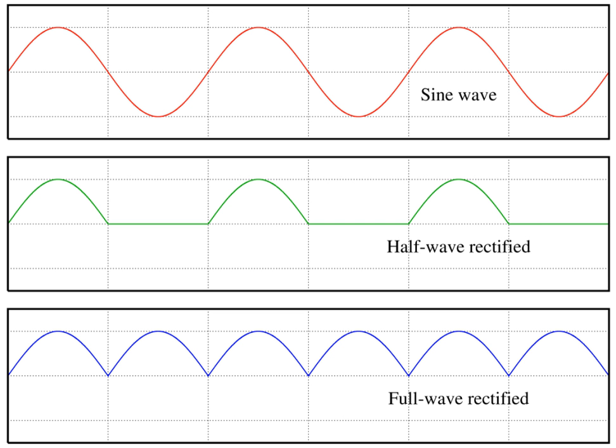Waves exhibit common behaviors under a number of standard situations. Waves normally move in a straight line through a transmission medium. Such media can be classified into: a bounded medium if it is finite in extent, otherwise an unbounded medium; a linear medium if the amplitudes of different waves at any particular point in the medium can be added; a uniform or homogeneous medium if its physical properties are unchanged at different locations in space; an anisotropic medium if one or more of its physical properties differ in one or more directions; an isotropic medium if its physical properties are the same in all directions.